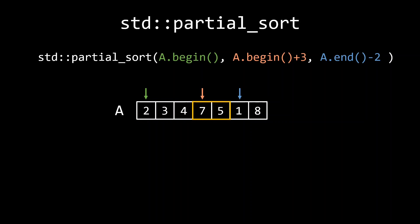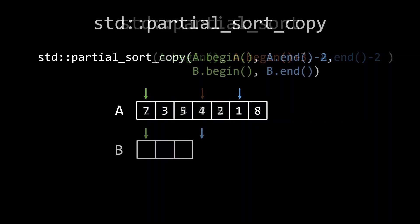Partial sort also has an underscore copy variant, which you can use if you don't want to modify the input range. Partial sort copy accepts an input and an output range. It then automatically determines how many elements you want to sort based on the size of the output range. In this example, where we are still using the default comparison operator, it will sort the 3 smallest elements in the input range into the output container B.